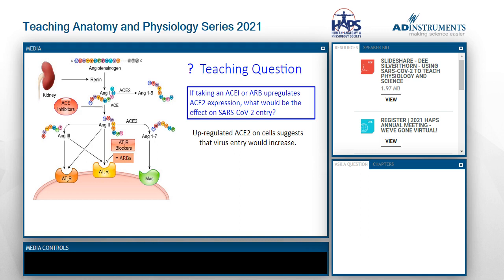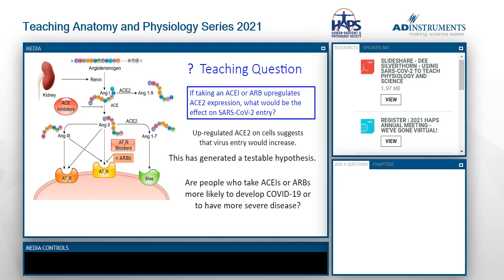The prediction is that cells upregulate ACE2 expression in response to increased substrate caused by these antihypertensive drugs. If we then take that further: if there's increased ACE2 expression, what happens to SARS-CoV-2 entry into cells? You'd assume that if ACE2 is the receptor, it makes it much easier for cells to take up the virus. Through this series of predictions, we've generated a testable hypothesis: are people taking ACE inhibitors or ARBs more likely to develop COVID-19 or have more severe disease? Let's look at the evidence.